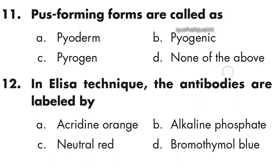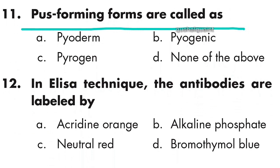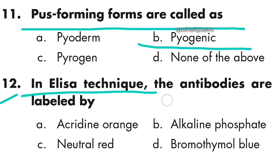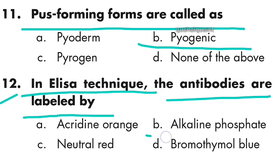Question 11: Post-forming forms are called pure xenic. Option B is right. Question 12: In the ELISA technique, the antibodies are labeled by alkaline phosphatase. Option B is right.